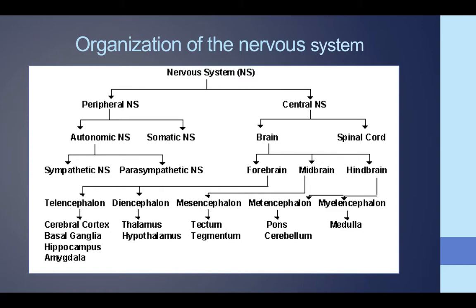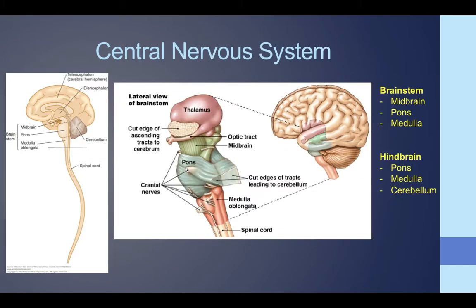Going back to the central nervous system, you can see some of the origins of the brain leading to things like the pons, the cerebellum, and the medulla. Here's the central nervous system — you can see the brain and the spinal cord. The brainstem is the connector of the brain to the spinal cord, and it is comprised of the midbrain, the pons, and the medulla. The hindbrain does not include the midbrain, but includes the pons, the medulla, and the cerebellum.